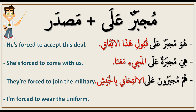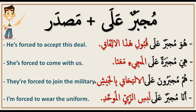'I'm forced to wear the uniform.' So: أنا مجبرة على. 'Wear the uniform' — لبس الزي الموحد. Full sentence: أنا مجبرة على لبس الزي الموحد. مجبرة على لبس الزي الموحد means 'forced to wear the uniform.'